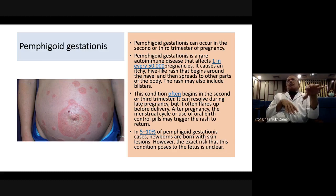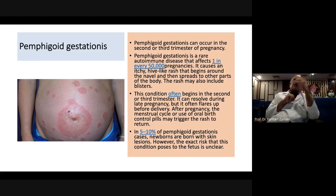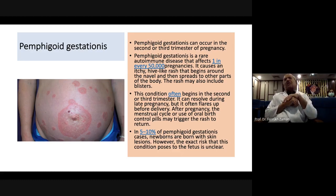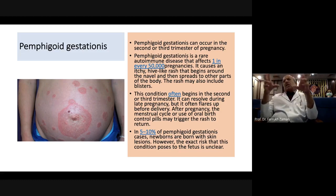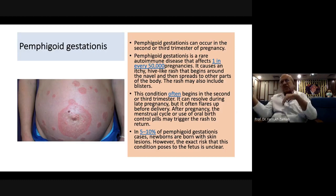If ICP is identified at 35 weeks, steroids for lung maturity should be given, liver functions tested, and if delivery is indicated before 37 weeks, it can be undertaken with steroid cover. Regarding the mechanism of intrauterine death: taurocholate crosses into fetal circulation causing cardiac arrhythmias; additionally, bile acids in amniotic fluid cause constriction of umbilical vessels, and high maternal bile acid concentrations transfer into the amniotic compartment contributing to meconium staining and fetal asphyxia.